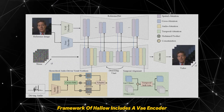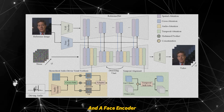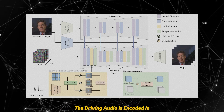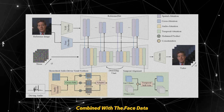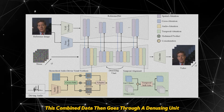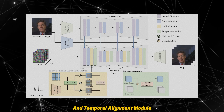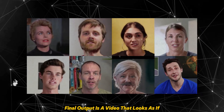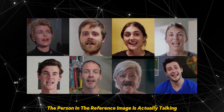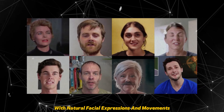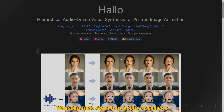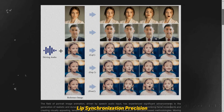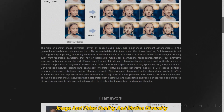The framework of Halo includes a VAE encoder and a face encoder that work together to process the reference image. The driving audio is encoded and combined with the face data. This combined data then goes through a denoising unit and temporal alignment module to ensure smooth and consistent animations. The final output is a video that looks as if the person in the reference image is actually talking or singing, with natural facial expressions and movements. What sets Halo apart is its ability to enhance lip synchronization precision, image and video quality, and motion diversity.